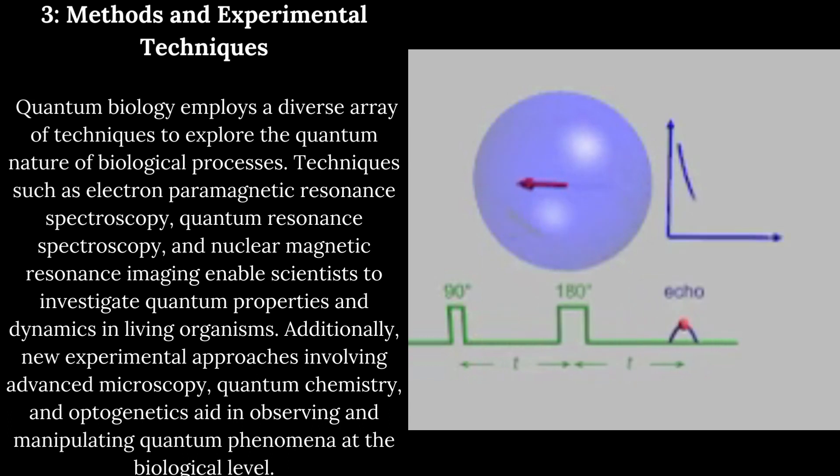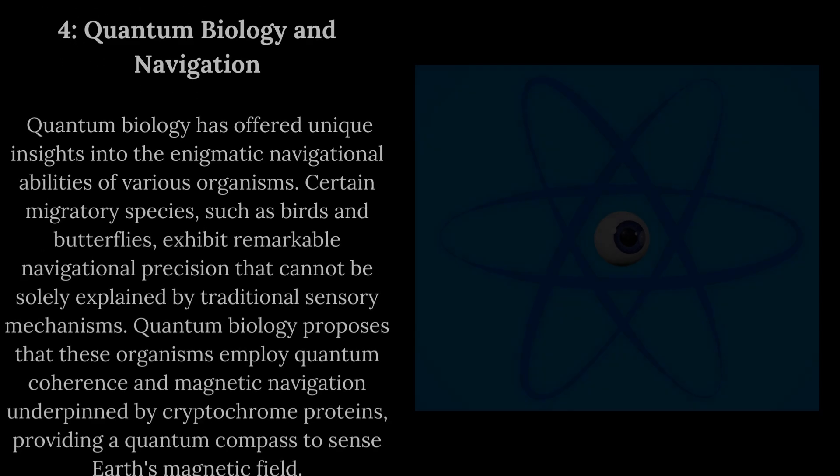quantum resonance spectroscopy, and nuclear magnetic resonance imaging enable scientists to investigate quantum properties and dynamics in living organisms. Additionally, new experimental approaches involving advanced microscopy, quantum chemistry, and optogenetics aid in observing and manipulating quantum phenomena at the biological level.